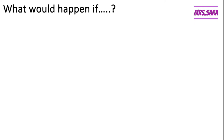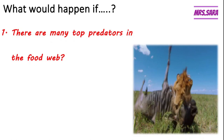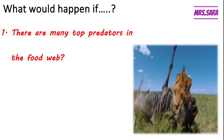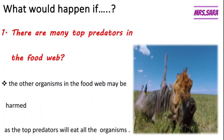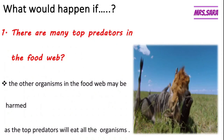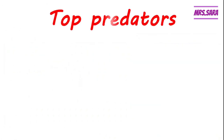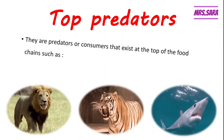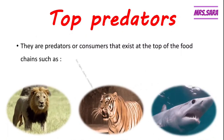What would happen if there are many top predators in the food web? Top predators like lion and tiger, when there are many of them in the food web, the other organisms may be harmed and the top predators will eat all the organisms, so you can't see any other animals or organisms. Top predators like lion, tiger, shark, and crocodiles are the consumers that exist at the top of the food chain.